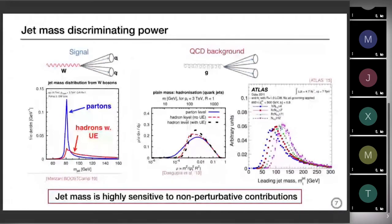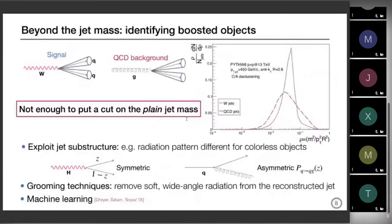So if you want to identify a boosted object like the W from the abundant QCD background, you cannot just plot the mass distributions for W and QCD jets and put a cut around the W mass peak — you'd have a high contamination coming from QCD. And these QCD jets are way more abundant than the W. So how do we try to distinguish these two processes?